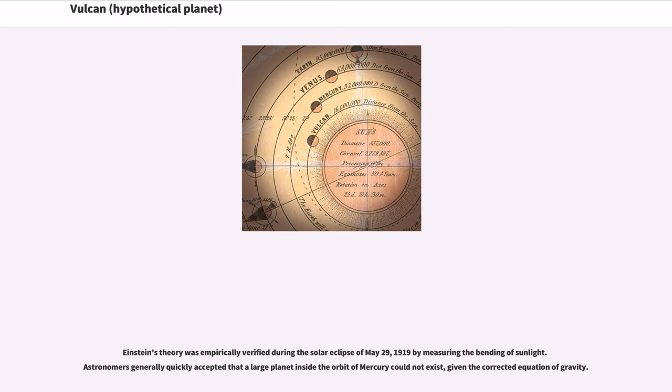Einstein's theory was empirically verified during the solar eclipse of May 29, 1919 by measuring the bending of sunlight. Astronomers generally quickly accepted that a large planet inside the orbit of Mercury could not exist, given the corrected equation of gravity.